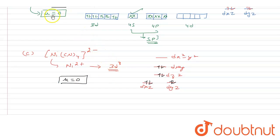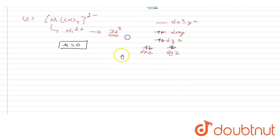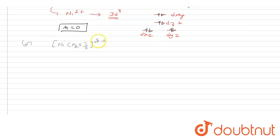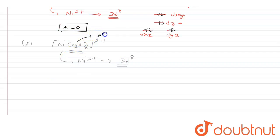Now the fourth complex, [Ni(H₂O)₆]²⁺. This is an octahedral complex because there are 6 coordination numbers. Nickel is in +2 oxidation state, giving electronic configuration 3d8. Water is a weak field ligand, so in the octahedral crystal field splitting, the orbitals split into T2g and Eg levels.